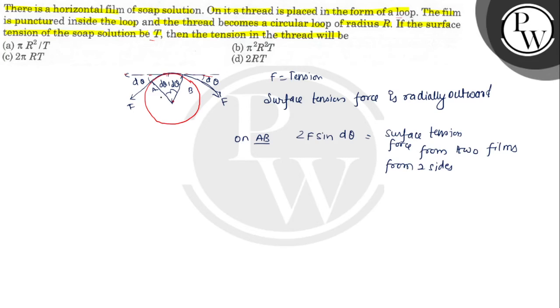Now, theta is a very small angle. For small angle, sin d theta is approximately equal to d theta. So we can write 2F d theta.